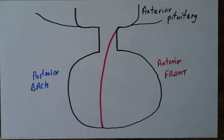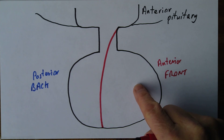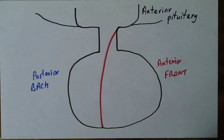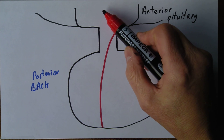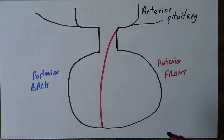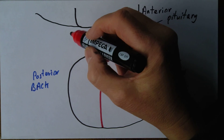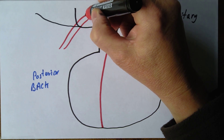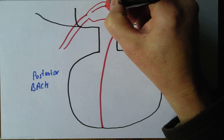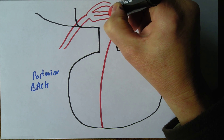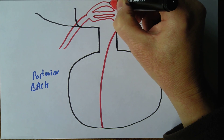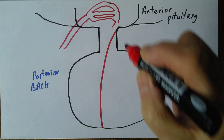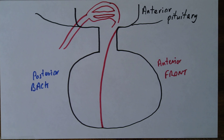The regulation of the anterior lobe of the pituitary gland is controlled by specialised hormones made in the brain — really it's the hypothalamus, the brain, controlling the whole physiological system. There's an arterial supply going into the hypothalamus that divides into a network of capillaries. This is the first network of capillaries in this system, so it's called the primary capillary plexus.